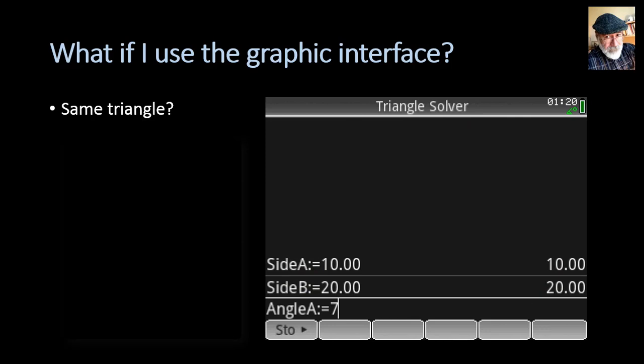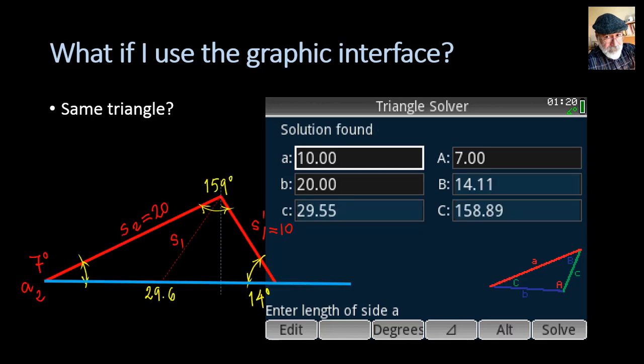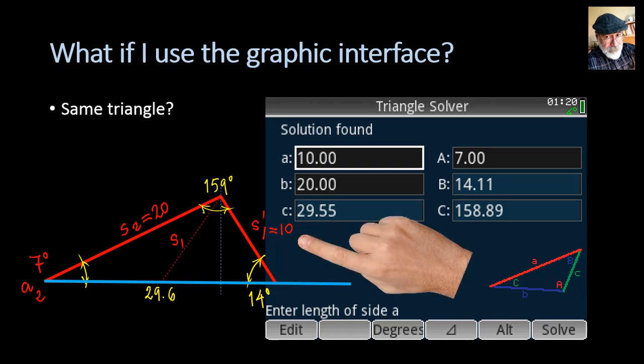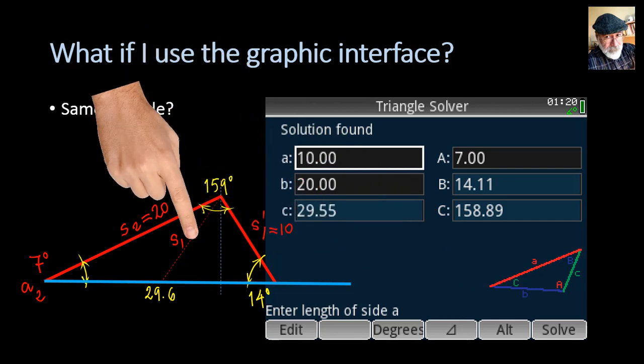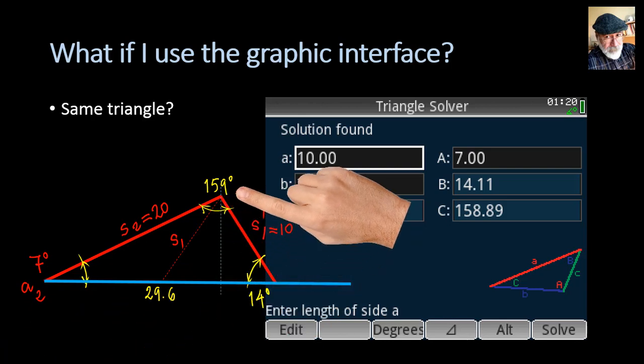Why? Because I want to set the three parameters, side A, side B, and angle A from outside. Sure enough, the three values we entered outside of the application are there. 10, 20, and 7 degrees. We click on solve, and sure enough, we get a solution. That is the solution of the first SSA triangle we've seen before. The sides 10, 20, and 29.6. And the angles 7 degrees, 14 degrees, and 159 degrees.